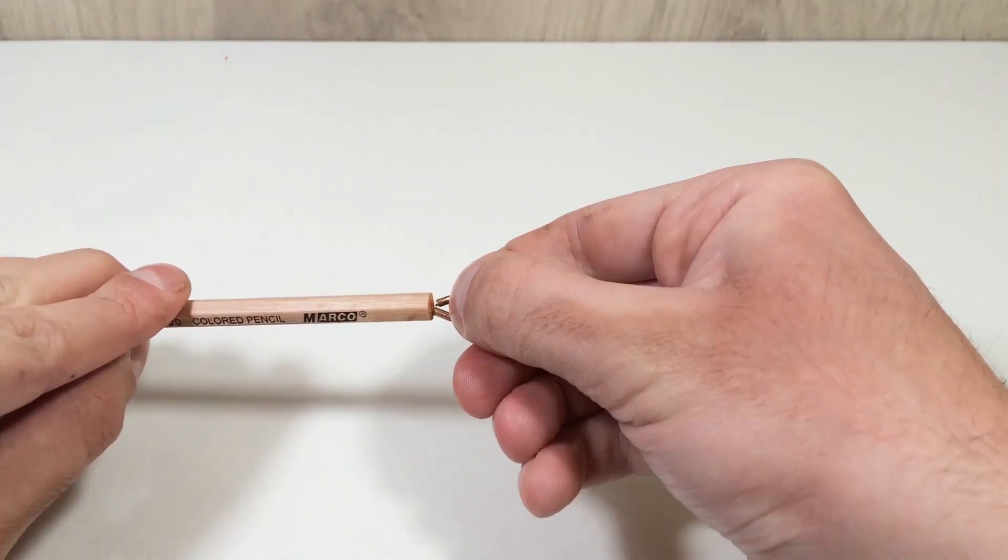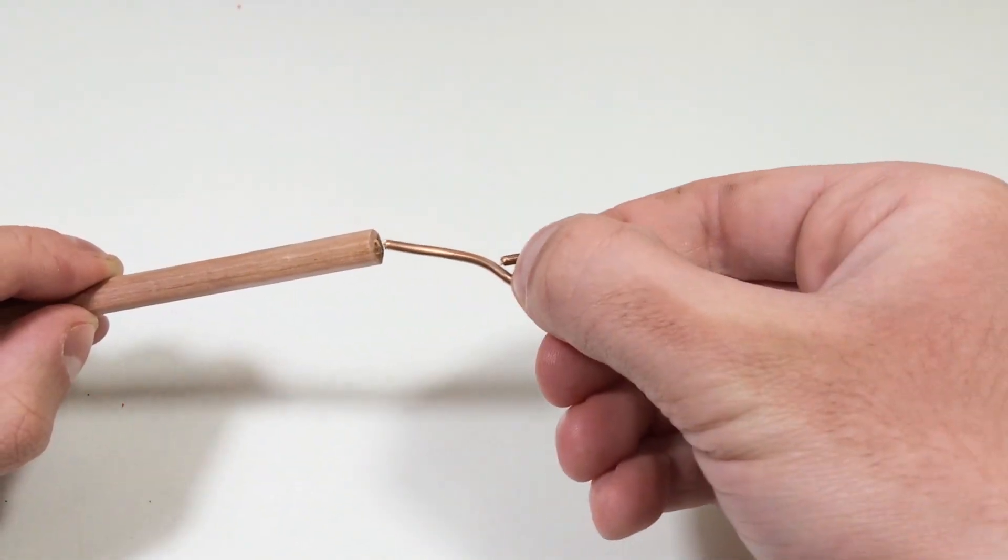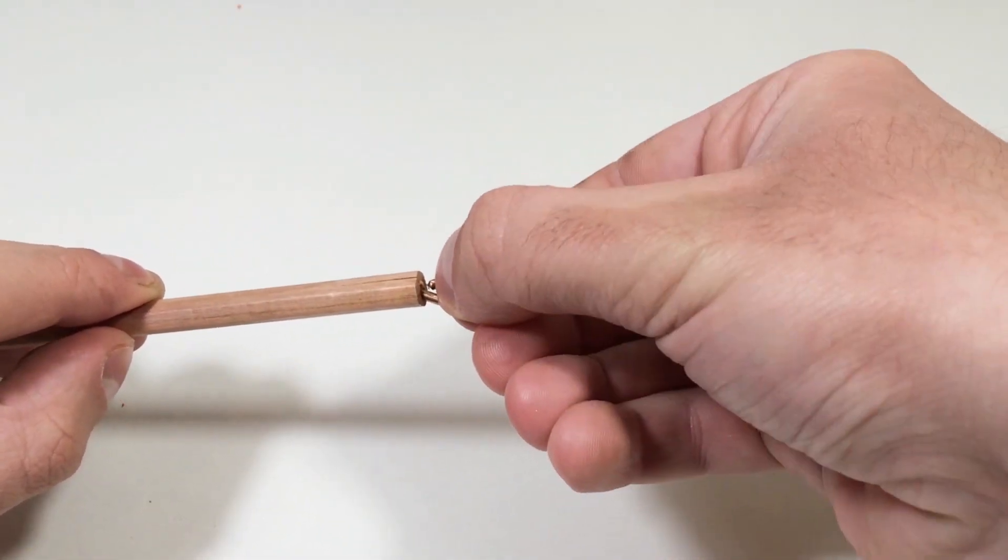Insert the copper wires into the holes in the pencils and secure them well. These will carry electricity to our heating wire.